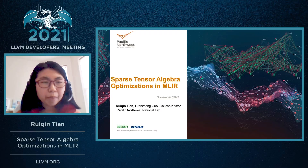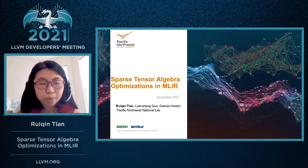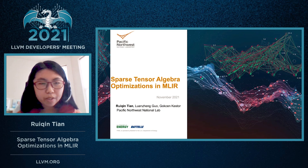Hello everyone, my name is Rui Qingtian. I'm a postdoc researcher at PNL. Today I'm going to introduce our work on Sparse Tensor Algebra Optimizations in MLIR. This work is collaborated with Dr. Luai Zheng Guo and Dr. Goshen Kester from PNL.